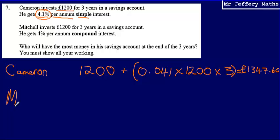Then Mitchell, now he is getting a slightly lower percentage, but he's getting this as compound interest. Now why this is significant is because with compound interest, you get your 4% of your initial amount in the first year, so 4% of £1,200, and that will be added on to your amount. But when it comes to the second year,